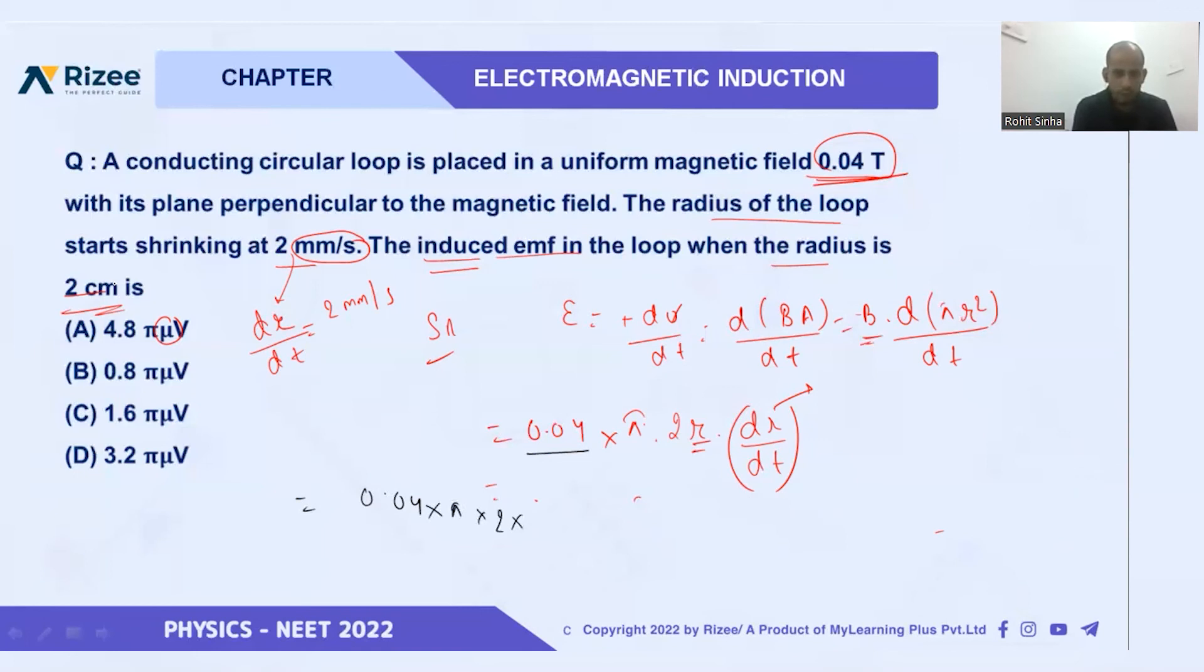0.04, it is in SI units. I will write it like this: 0.04 × π × 2 × r. R is given as 2 centimeters, that's 2 × 10^-2 meters. Times dr/dt, which is given as 2 millimeters per second, that's 2 × 10^-3 meters.